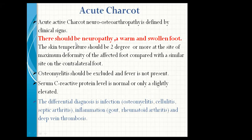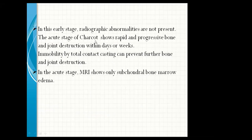Acute Charcot neuro-osteoarthropathy is defined by clinical signs: there should be neuropathy, warm and swollen foot. The skin temperature should be two degrees or more at the site of maximum deformity compared with the similar site on the contralateral foot. Osteomyelitis should be excluded and fever is not present. Serum C-reactive protein level is normal or only slightly elevated. The differential diagnosis includes osteomyelitis, cellulitis, septic arthritis, gout, rheumatoid arthritis, and venous thrombosis.